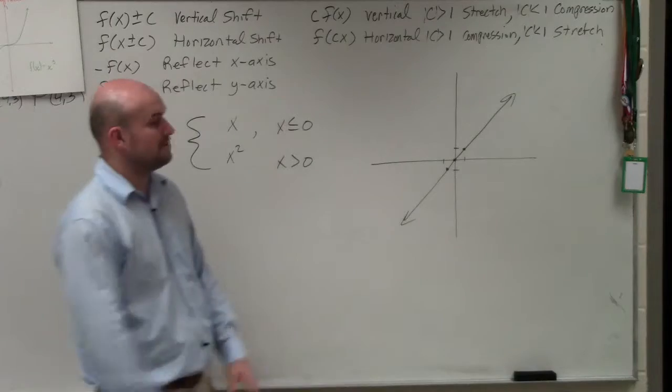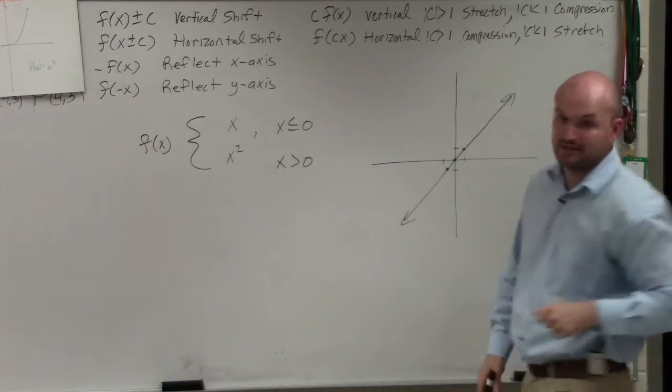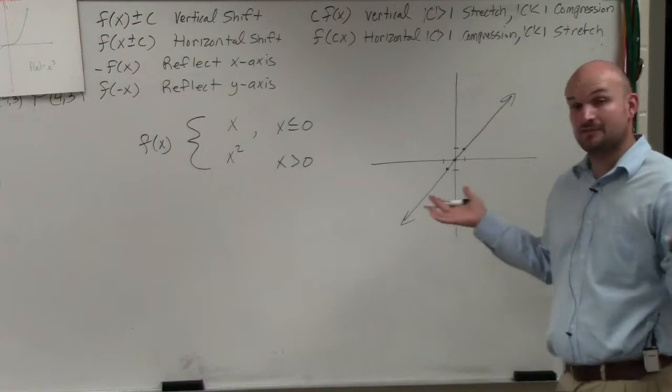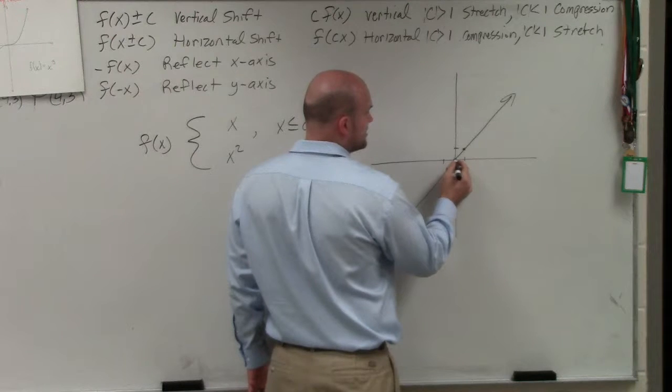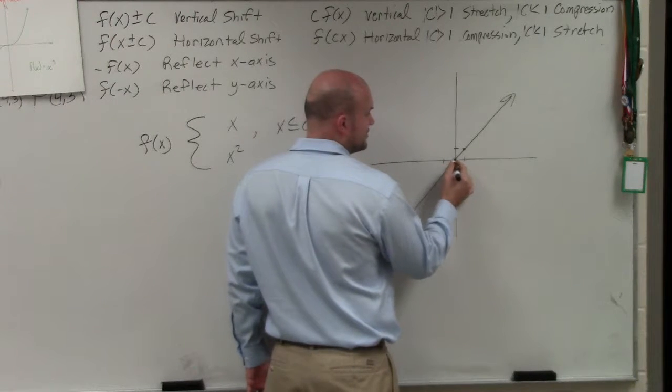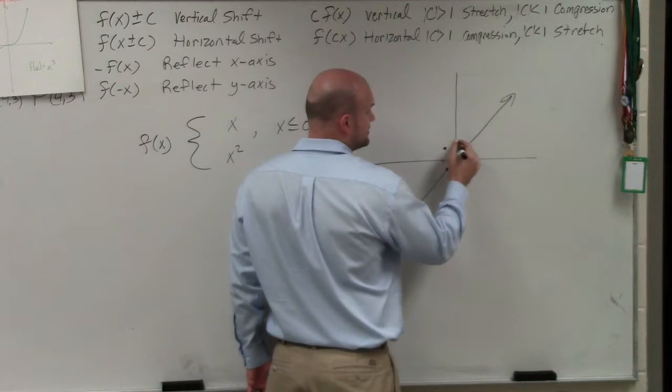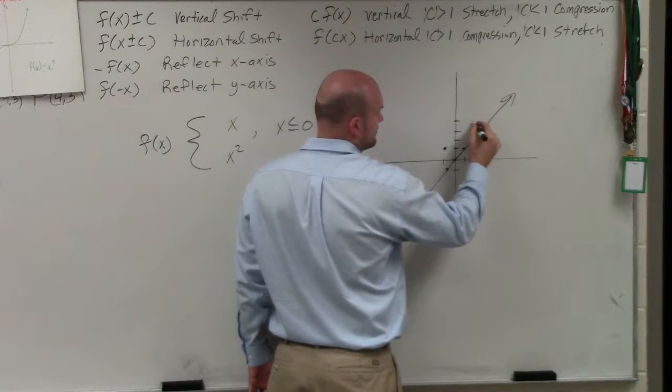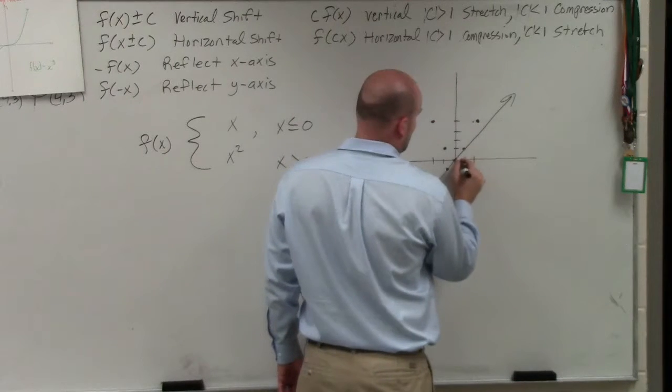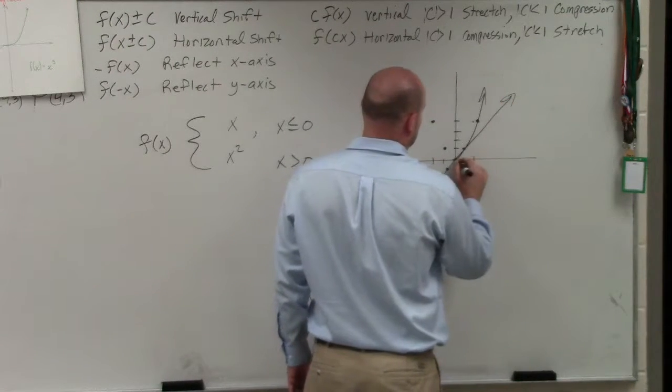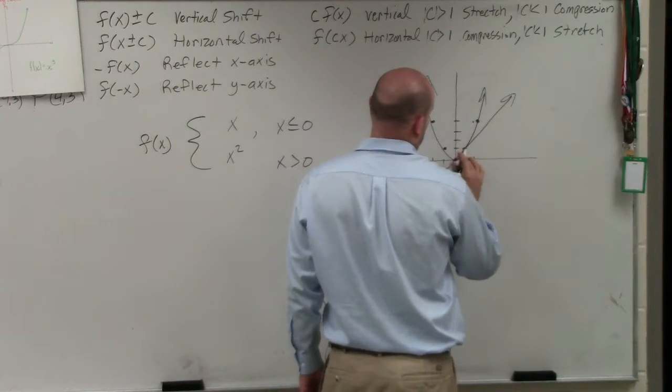Then we have x squared. I'm just going to graph that for all x. That is a parabola. Again, that's presented right there just as x squared. So I'm just going to graph that for all x. If you remember in Algebra 2, when we were graphing using transformations, that one has an origin at 0. Then over 1, up 1. Over 1, up 1. Over 2, up 4. 1, 2, 3, 4. And over 2, up 4. And remember, that was our u-shaped graph.